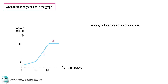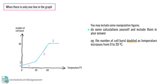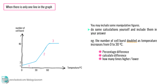You can also include some manipulative figures — it means that you do some calculations yourself and include them in your answer. For example, in the first description, I could say that the number of cell bursts doubled as the temperature increases from 0 to 30 degrees Celsius. You can calculate the percentage, find the difference, or mention how many times it is higher or lower. There's no right or wrong ways as long as you calculate it correctly. Lastly, notice if there's any anomalous data in the graph and mention it, to show that there's a point that doesn't follow the general trend.